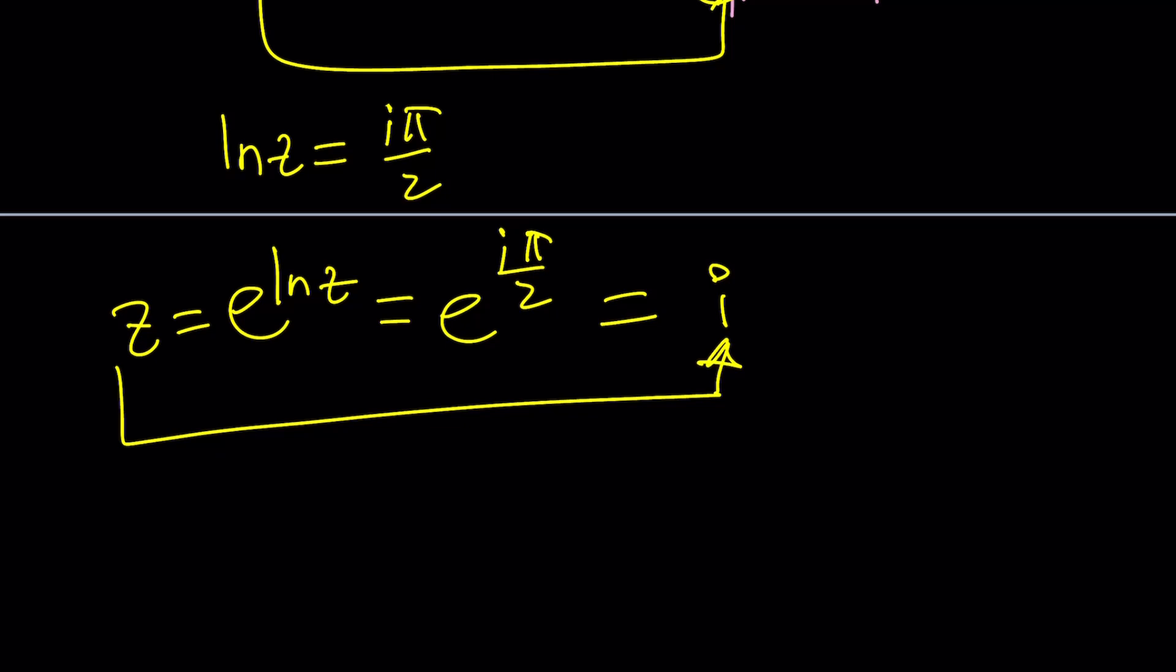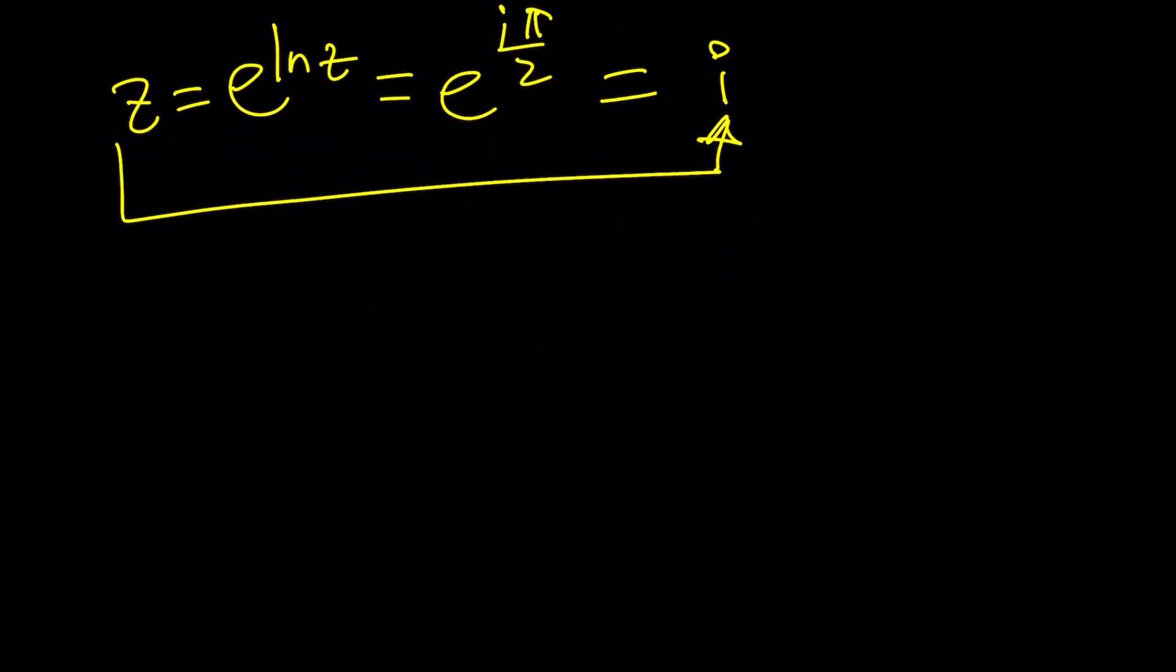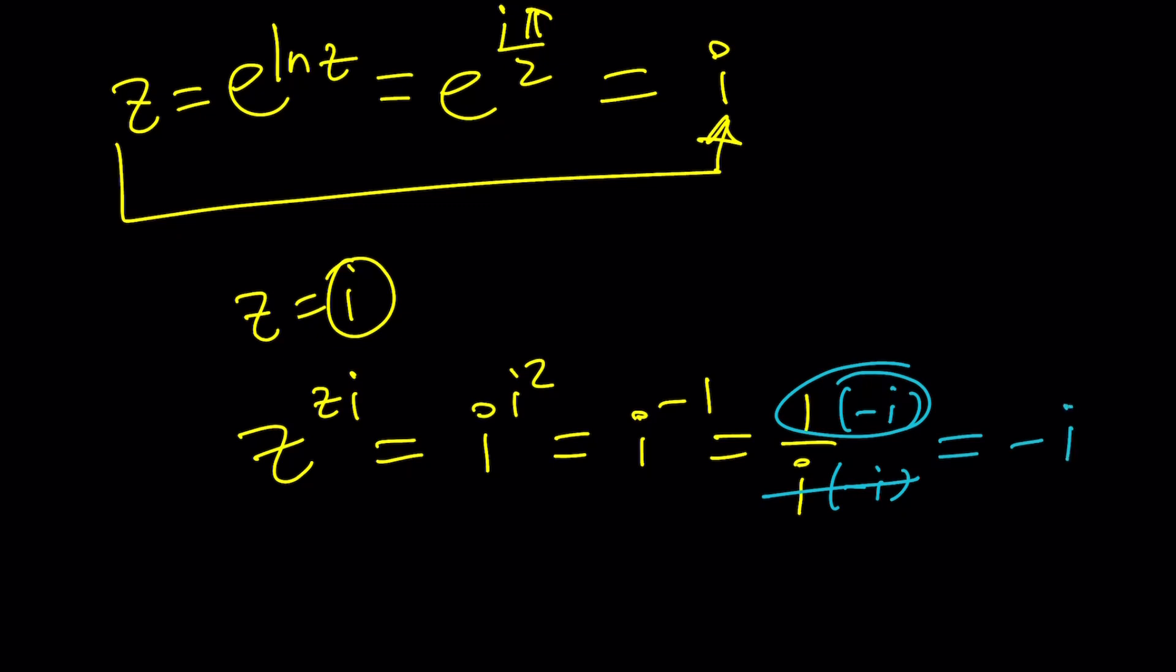Are you serious? Let's go check it out. So I'm claiming that z equals i is a solution. What's my equation? z to the zi. Let's go down and replace z with i. i to the power i times i is i squared, but i squared is negative 1. i to the power negative 1 means 1 over i. Multiply by negative i and negative i. This becomes 1 and this becomes negative i, which is what we had on the right hand side.